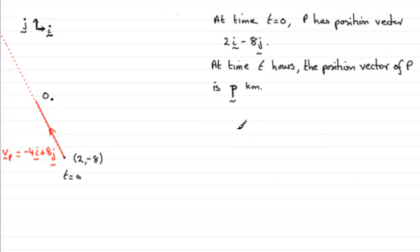But essentially, we should remember that for questions like this, the position vector of a particle at time t, let's denote it by r at time t,